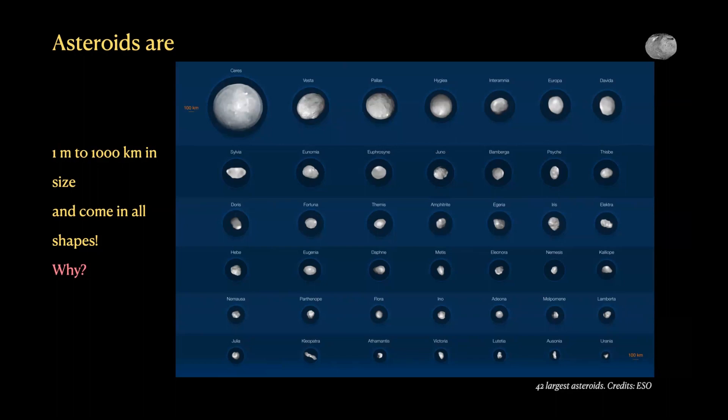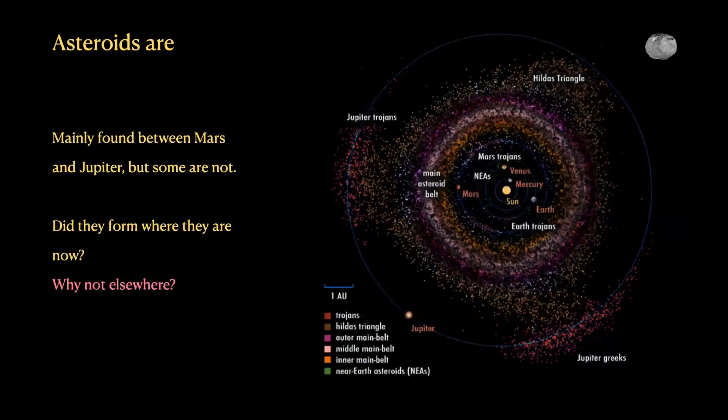Most asteroids are formed between Mars and Jupiter, but not all — the majority are there. The question is: do they all form between Mars and Jupiter, and if so, why? Or do they form elsewhere and collect there? Or do asteroids formed elsewhere go away? If you say asteroids form only between Mars and Jupiter, that's a bit strange and you'd have to explain why.